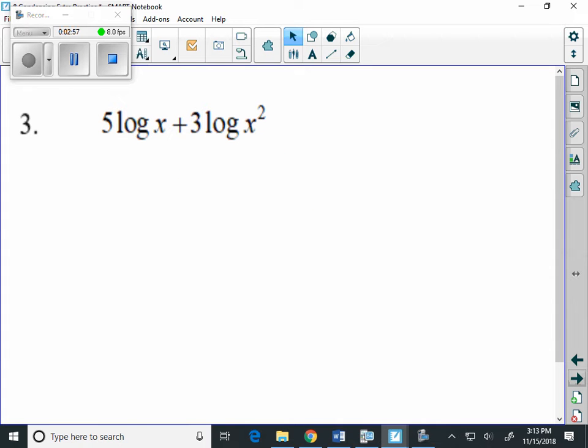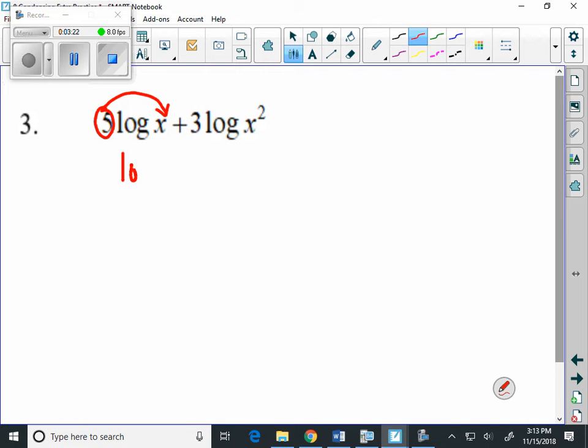Number 3, a little bit different on this problem. The first thing that I notice is that there's a coefficient on log of x, a 5. There's a number in front of the logarithm on each term. When we have something in front of the logarithm, we're going to raise it to the power. This is going to become log of x to the fifth, and we still have our plus 3 log of x squared.